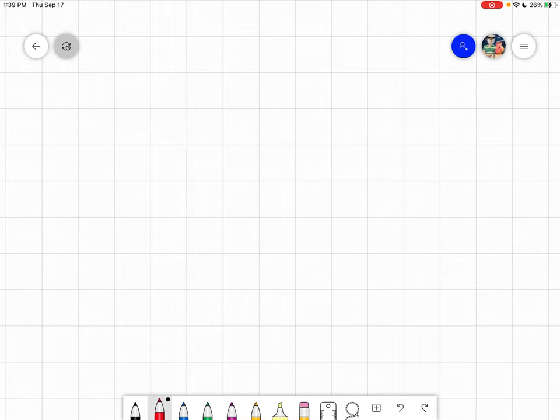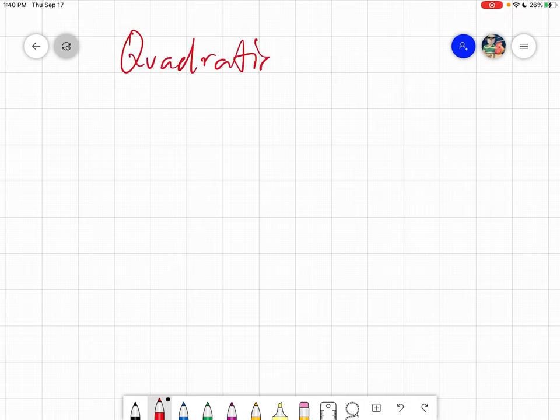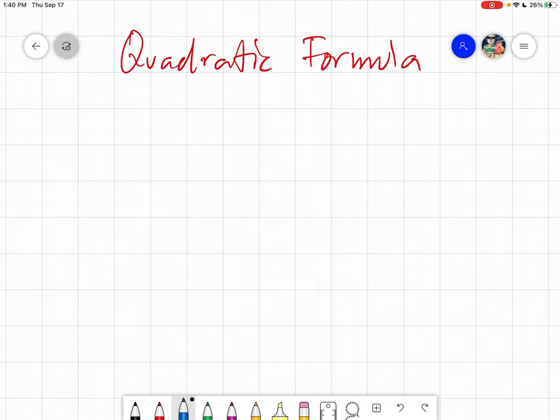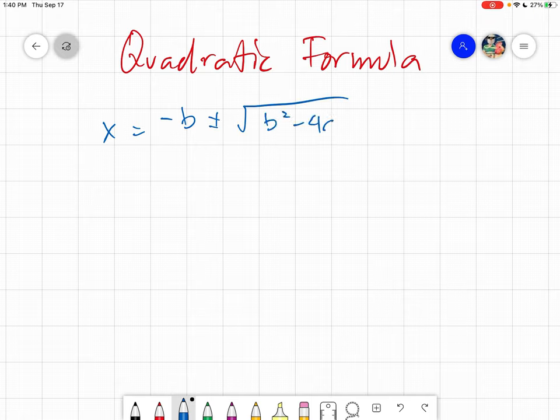Assalamualaikum warahmatullahi wabarakatuh, good day everyone. Today we will be discussing the quadratic formula and this one as a means for solving for the unknown for any quadratic equation. The quadratic formula is in the form of x equals negative b plus minus the square root of b squared minus 4ac divided by 2a.